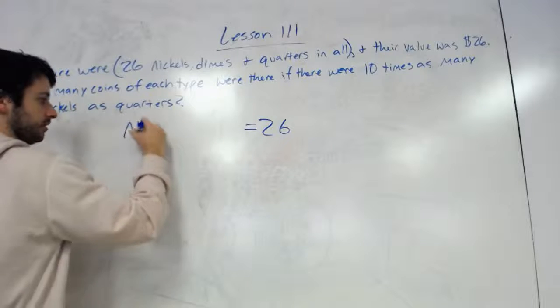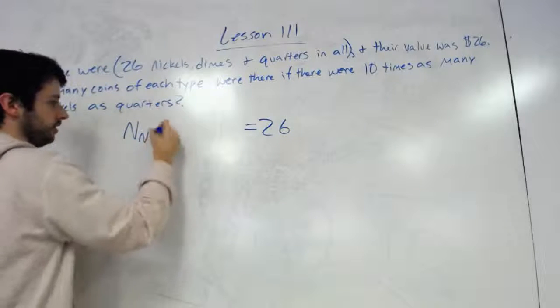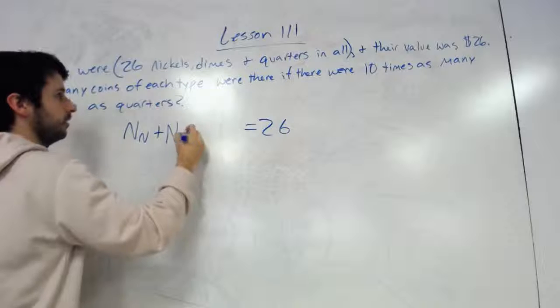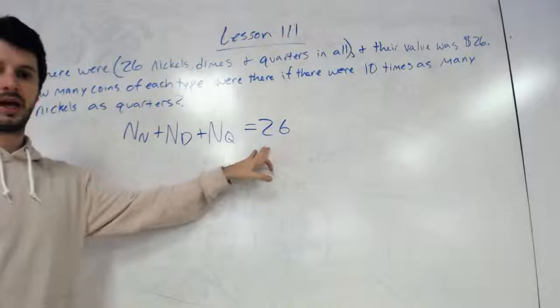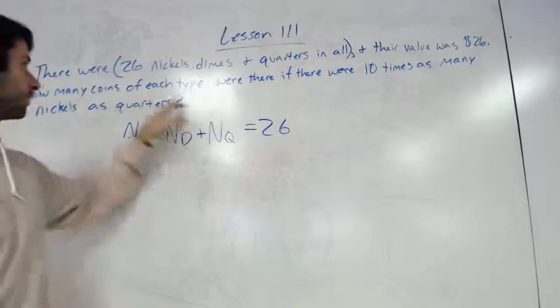The number of nickels we don't know, number of dimes we don't necessarily know, number of quarters we don't know, but we could say all three of them add up to be 26. So there's one statement of equality.